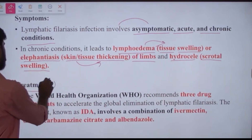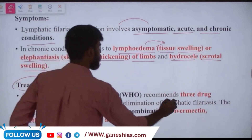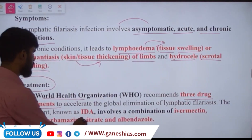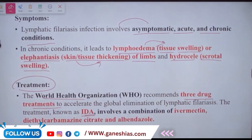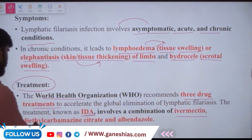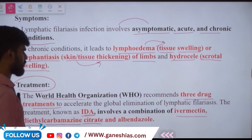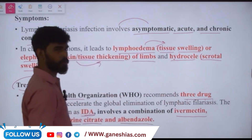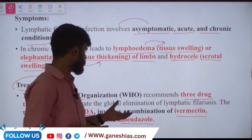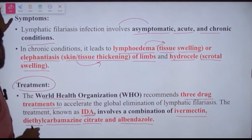For treatment, the WHO has recommended a three-drug treatment for lymphatic filariasis, known as IDA. The three drugs are: I — ivermectin, D — diethylcarbamazine citrate, and A — albendazole. These three drugs are administered together to people who have lymphatic filariasis.